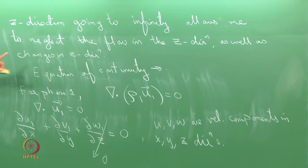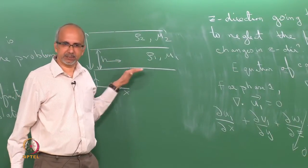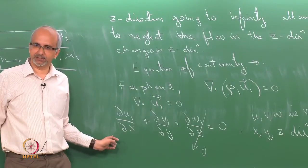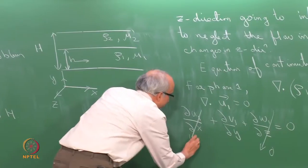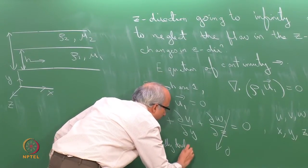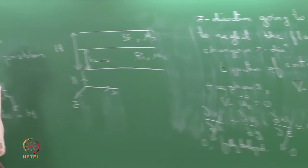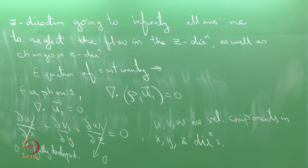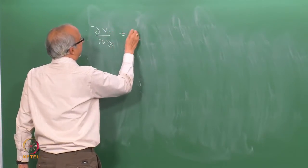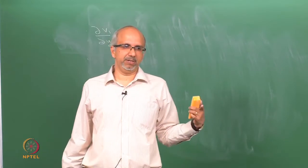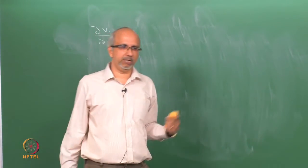The fully developed flow assumption means u does not change with x, so ∂u₁/∂x = 0. What remains is ∂v₁/∂y = 0, meaning v₁ does not change with y. The same equation applies for liquid 2, giving ∂v₂/∂y = 0.